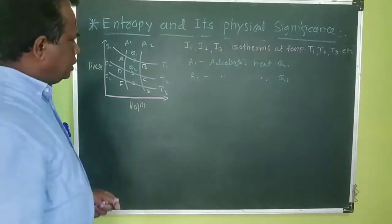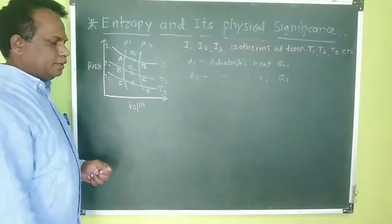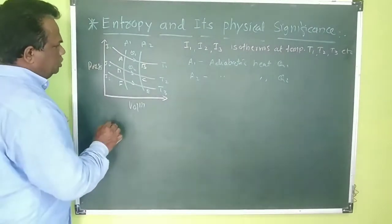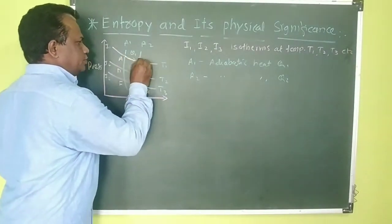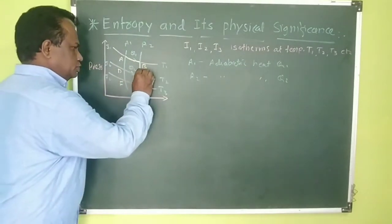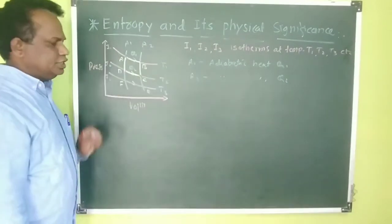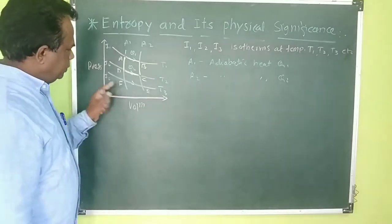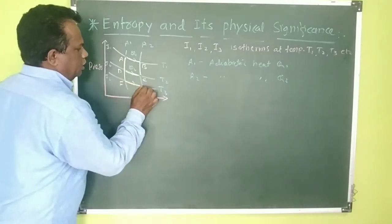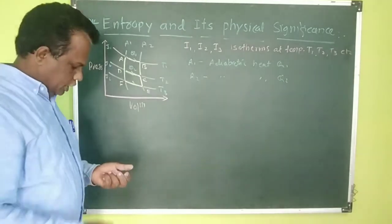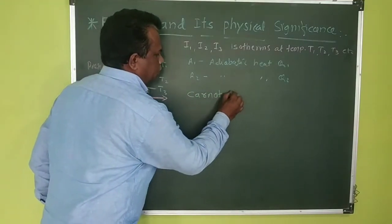From this figure we can consider two Carnot heat engines, which we have already studied. There are two Carnot cycles: one cycle goes from A to B, B to C, C to D, and D to A. A second Carnot cycle is D, F, C, D. So we consider two Carnot cycles on the same indicator diagram.